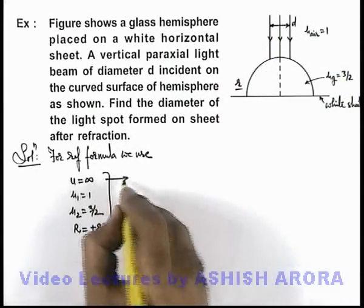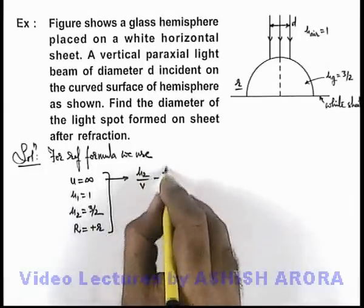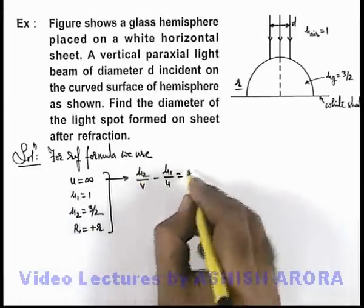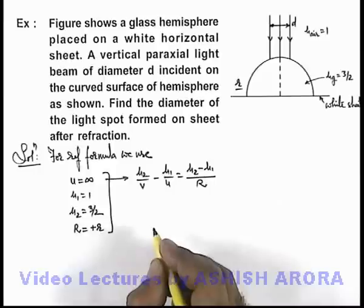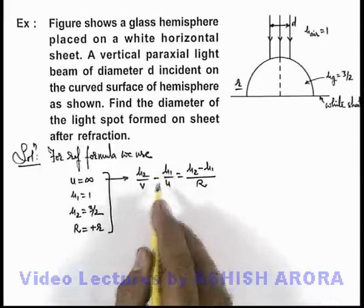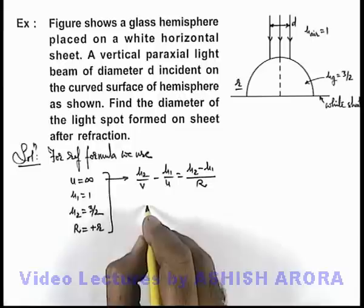Now from these values, if we substitute in the refraction formula μ₂/v - μ₁/u = (μ₂ - μ₁)/R, the second term will vanish as u equals infinity. On simplifying, we are getting: